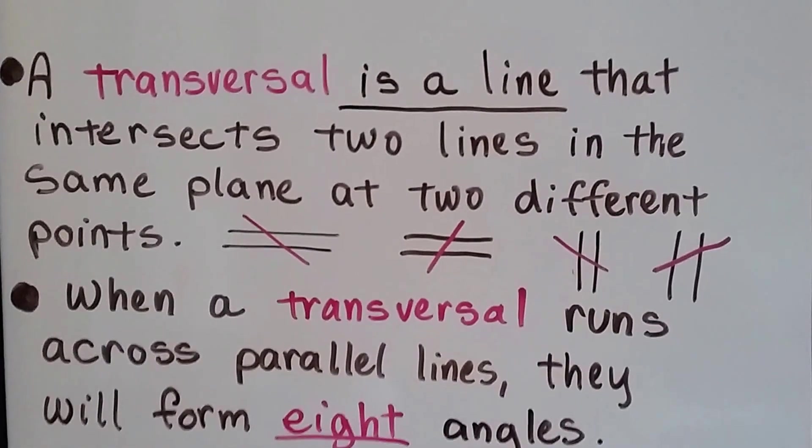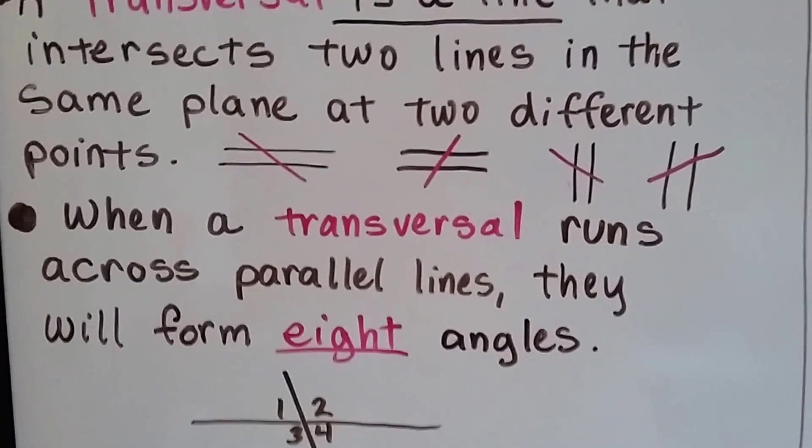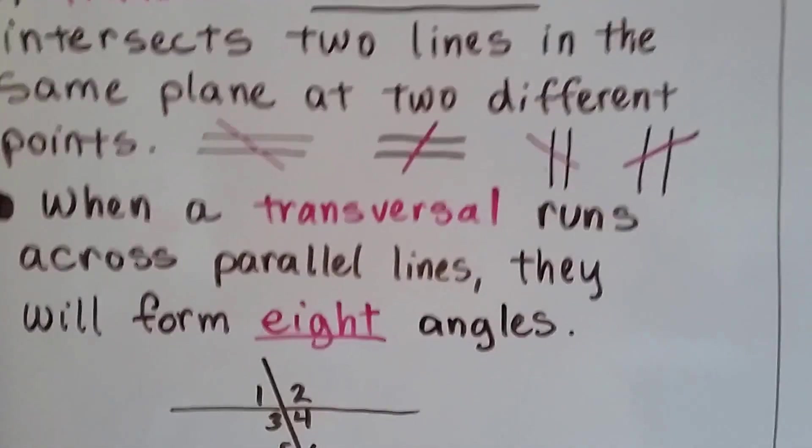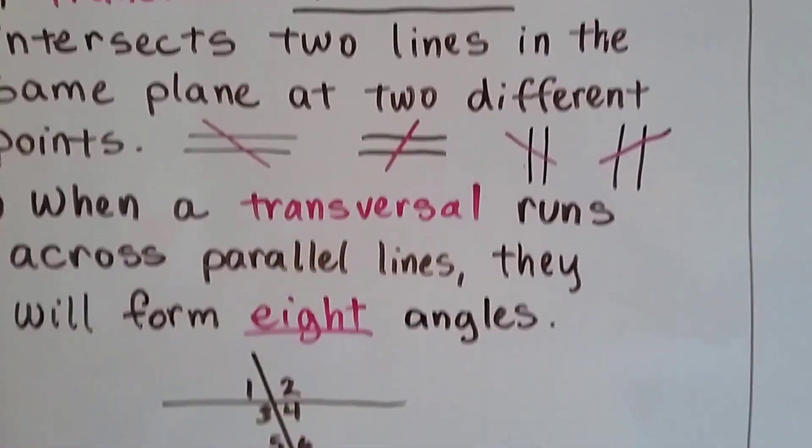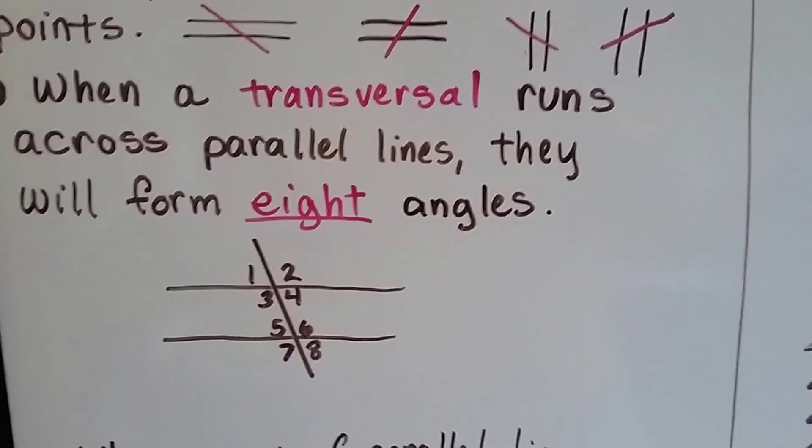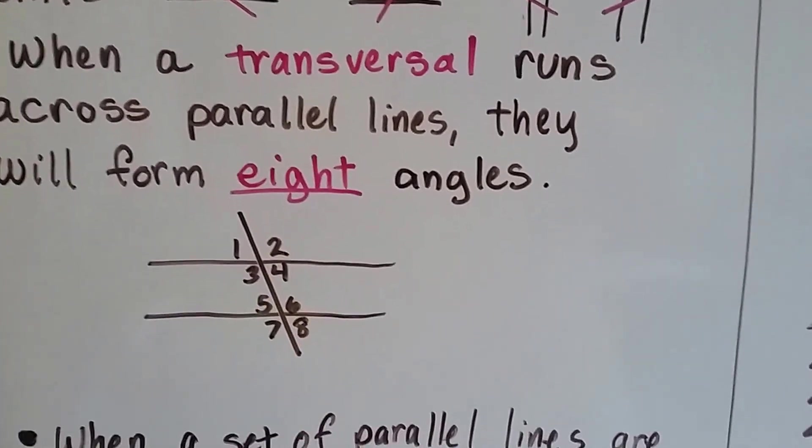We've been talking about how a transversal line intersects two lines in the same plane at two different points. So we have parallel lines and we have a transversal cutting through it. It can go on a negative slope or a positive slope. And we know now that transversals run across parallel lines and will make eight angles.